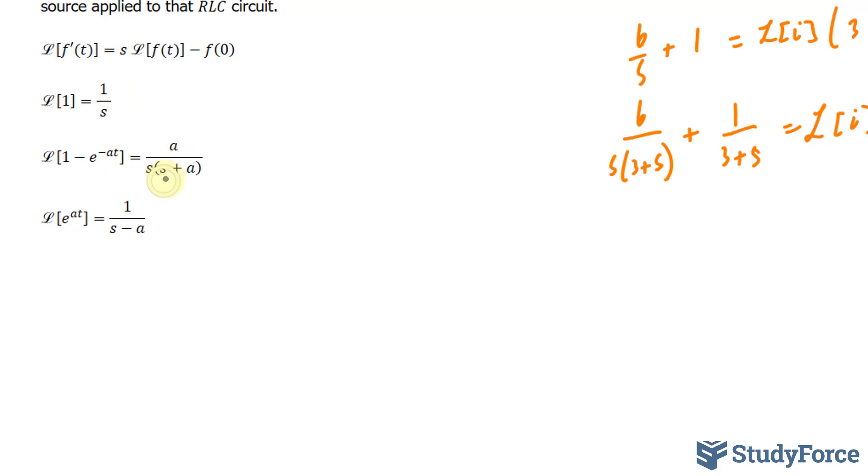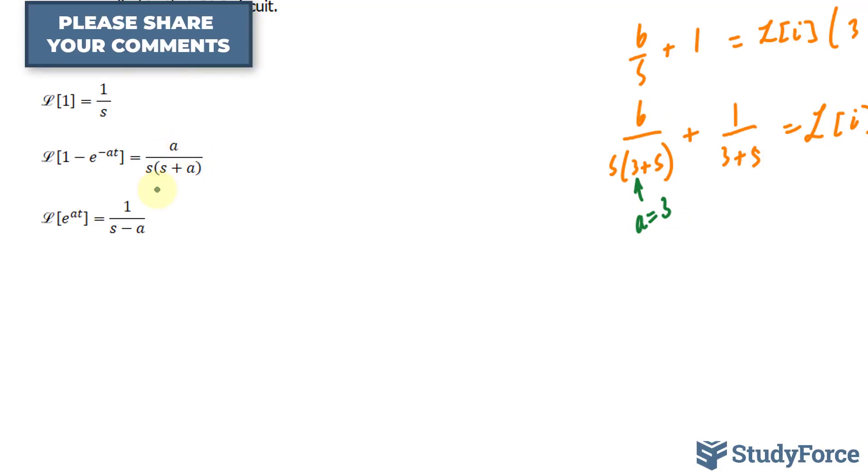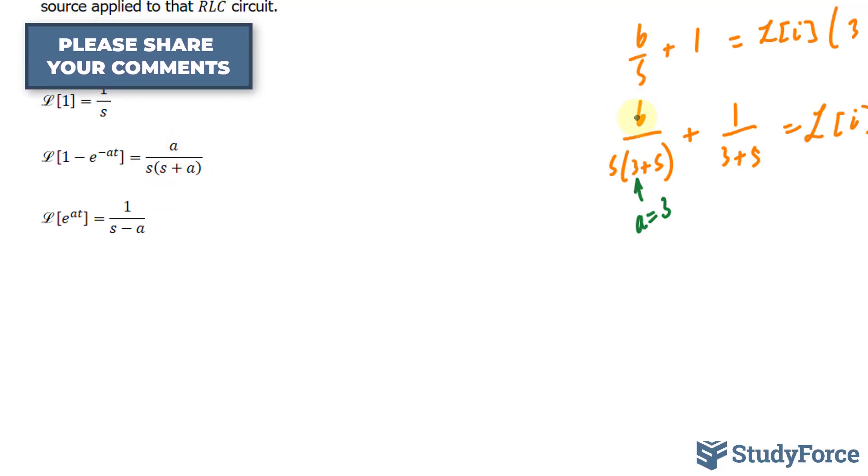We have a over s times s plus a. This expression models this expression. Our a value is equal to 3, but this 6 should equal to 3, given this model. So instead of 6, we can change this into 3 times 2.